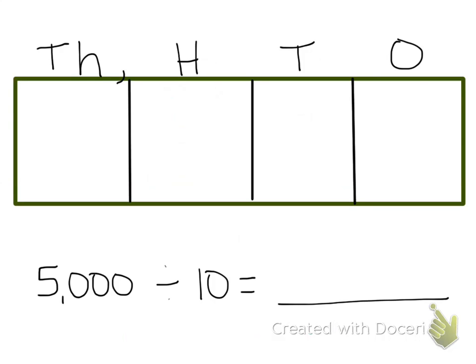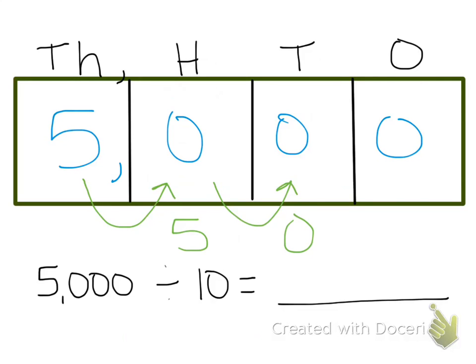If I want to divide 5000 divided by 10, let's start by putting it in our place value chart. When we're dividing by 10, we're moving everything one place to the right. So the 5 is going to move over, the 0 is going to move over, that 0 is going to move over, and I have to take away one 0. So 5000 divided by 10 is 500.